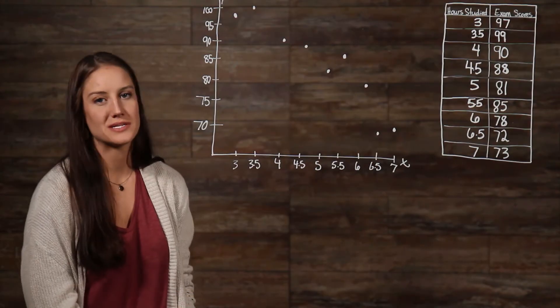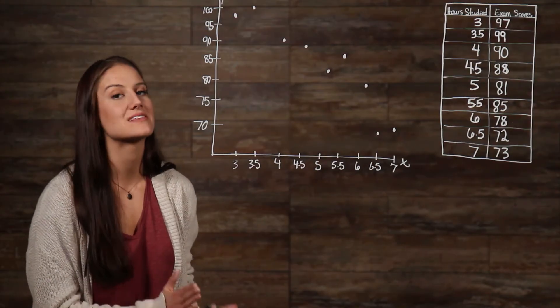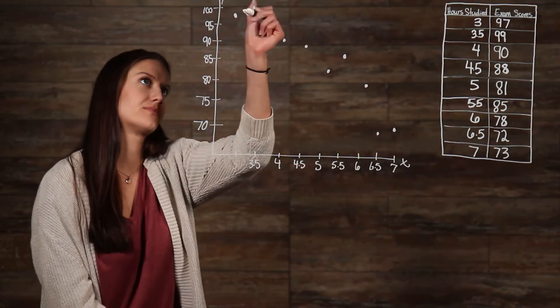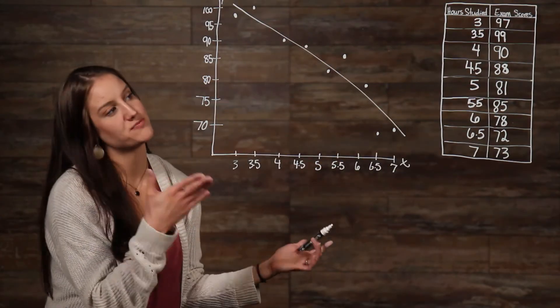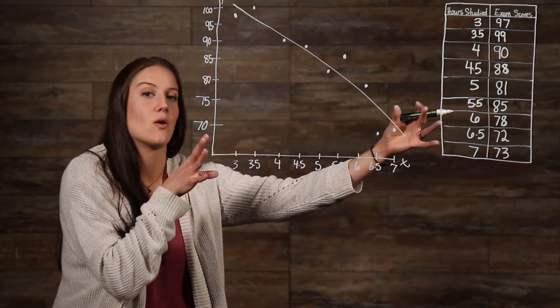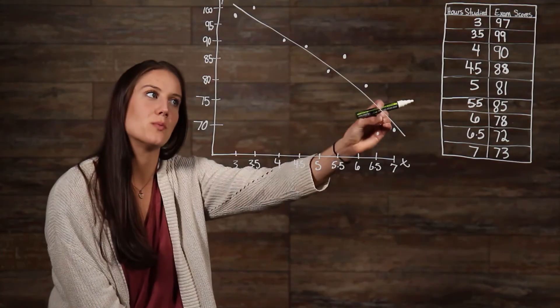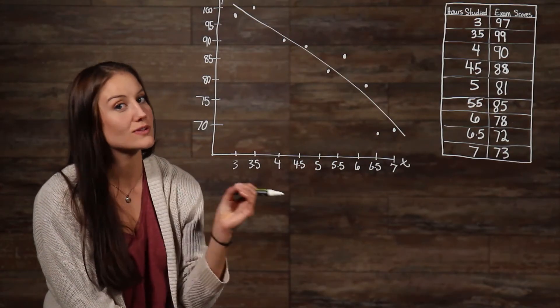Again, another way to show this would be to draw a line of best fit to represent the average trend of data. When we draw our line of best fit for this set of data, we can see that our line has a negative slope, which means that there is a negative relationship.